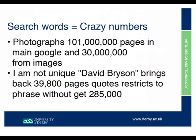In Google Images the word 'photographs' returns 30 million results. Even searching for a specific name like 'David Bryson' with quotes brings back 39,800 pages — and not all of them are the same person. Remove the quotes and you get 285,000 pages. You can see immediately the problems we have on the internet — that's why often your website is not found through Google but passed by word of mouth.